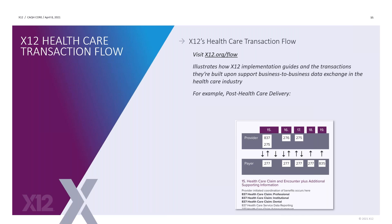If you're interested in seeing the X-12 healthcare transaction flow that includes the various implementation guides, you can visit x12.org — the specific URL would be x12.org/flow. There is a lot of information on that site, just more than you probably have had a chance to discover. Later in the slides I'm going to show you how to get to the code lists. This diagram is just a snapshot of a post-healthcare delivery. I encourage you to go to that site and take a look around and see all the different transactions.